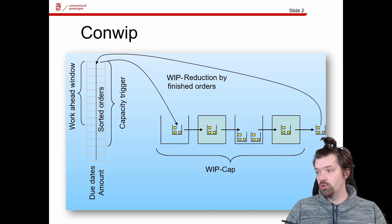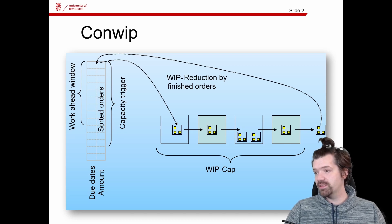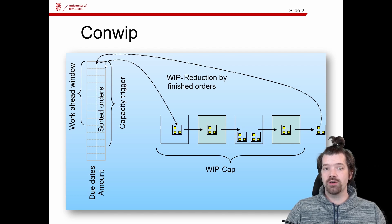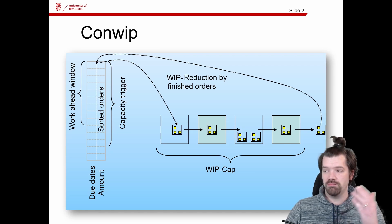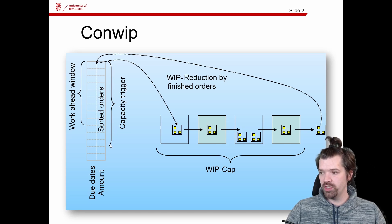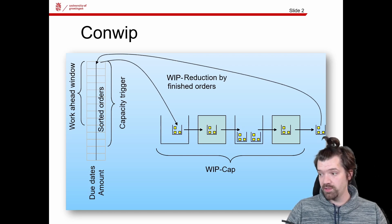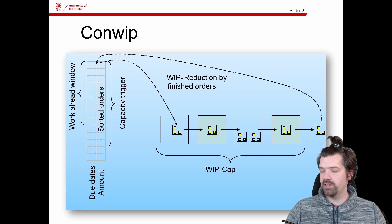Those are the two important input parameters. There is also a capacity trigger included. The capacity trigger provides information about whether we need more or less capacity — it is not directly connected to the work ahead window. It takes a longer time frame into consideration. For example, if it takes two weeks to hire or fire people, we take the accumulated demand over two weeks and check whether the accumulated customer demand is higher than the provided capacity. If so, we need more capacity; conversely, we can also reduce capacity.